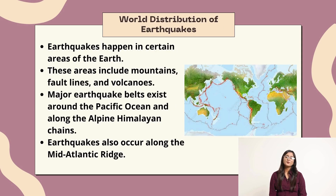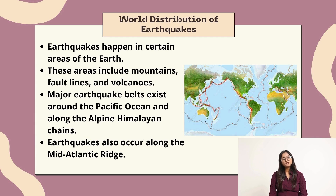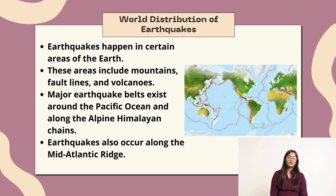World distribution of earthquakes. Earthquakes happen in certain areas of the earth. These areas include mountains, fault lines, and volcanoes. Major earthquakes exist around the Pacific Ocean and along the Alpine-Himalayan chains. Earthquakes also occur along the mid-Atlantic ridge.